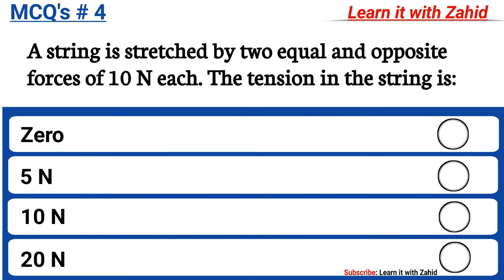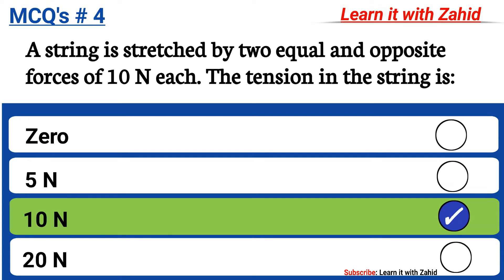A string is stretched by two equal and opposite forces of 10 Newton each. The tension in the string is: option A zero, option B 5 Newton, option C 10 Newton, option D 20 Newton. The correct answer is option C, 10 Newton.